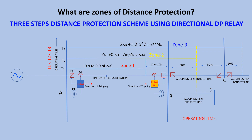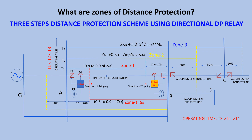The operating time of zone three should be more than the zone two operating time. Distance relay at B toward A will also have zone protections. Any fault at X1, say an earth fault, both side protections will operate and it will be under zone one protection because the fault happened at zone one of both sides. Any fault at X2 will cause zone two protection at A and zone one protection at B to operate, because the fault happened at different zones.